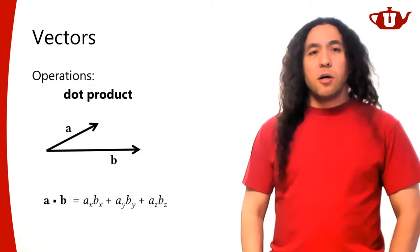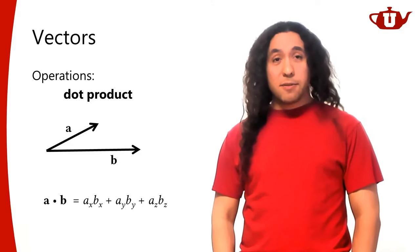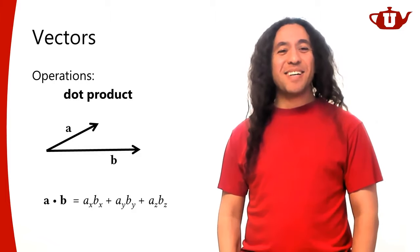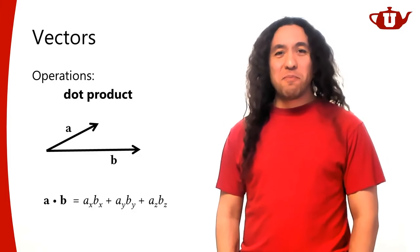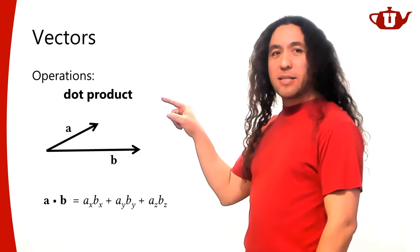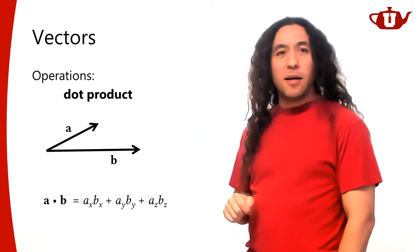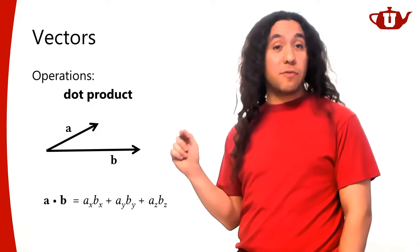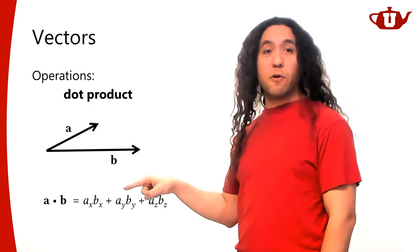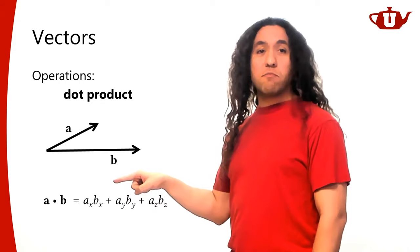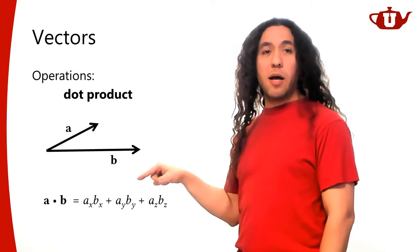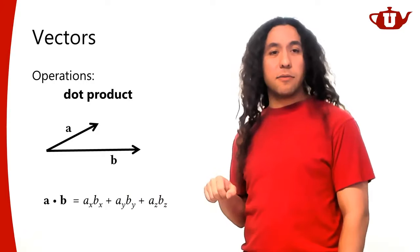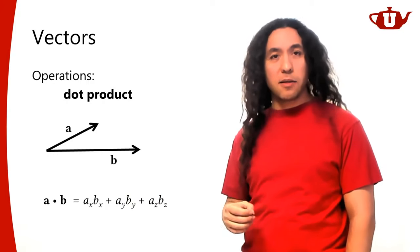When it comes to multiplication, there are multiple ways to do it with vectors. The most common is the dot product: it takes two vectors and forms a scalar. The formula is to multiply the x, y, and z components and add them together. The result is a scalar.